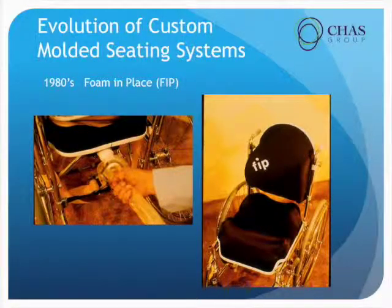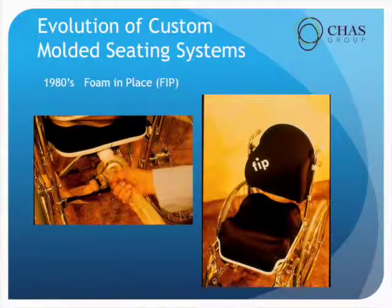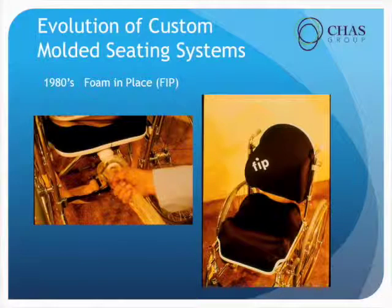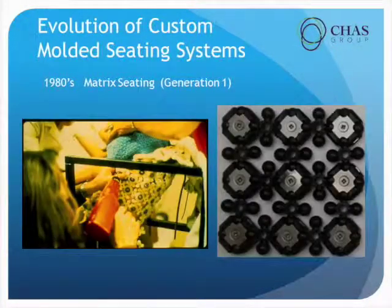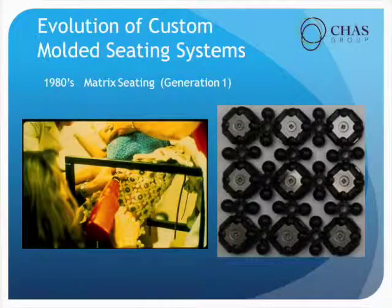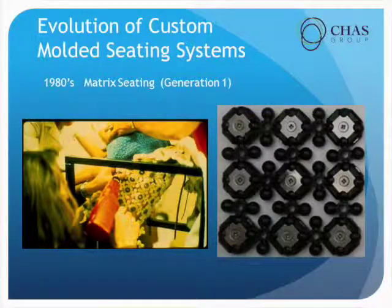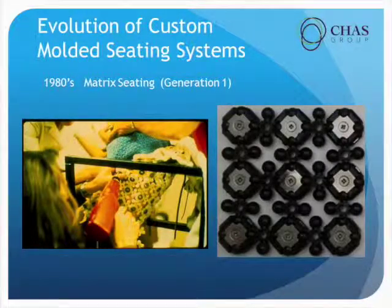Here's an early foam in place system — you can see it looks like they're actually pushing the mold through the back of the wheelchair, whereas now we pour it into a bag when we do a foam in place. Here's an early generation one matrix system. Matrix has gone through three generations — the third generation is what we're using now in the UK and here in the United States. This is the first generation of the matrix system.